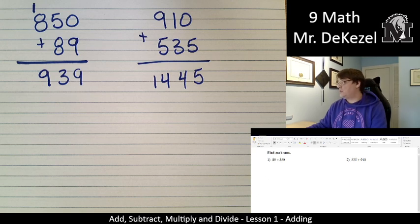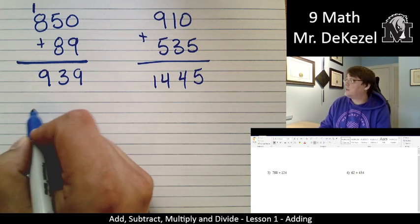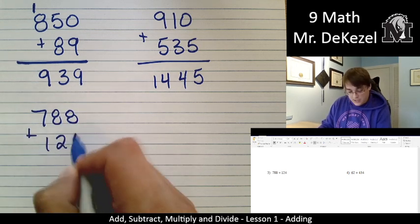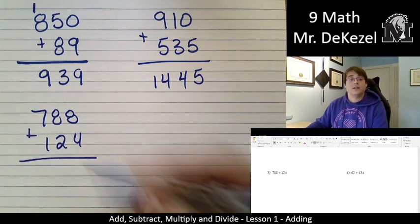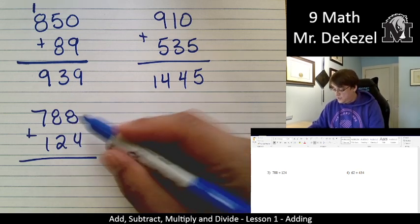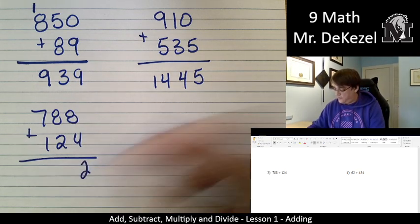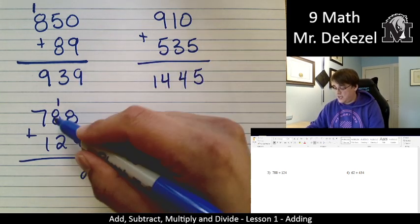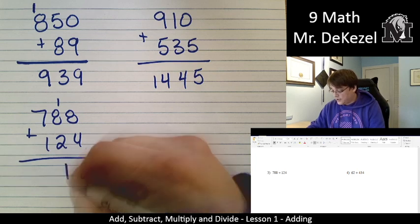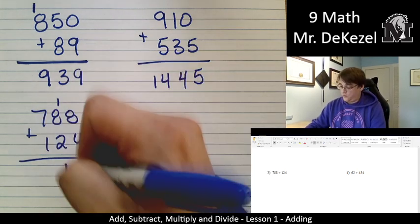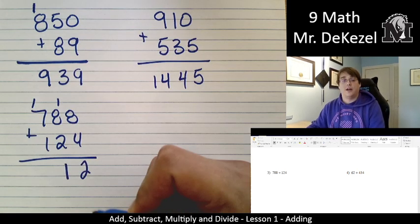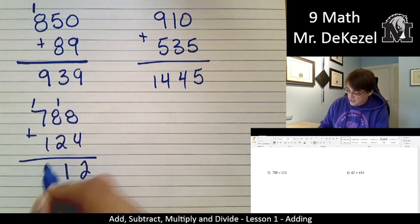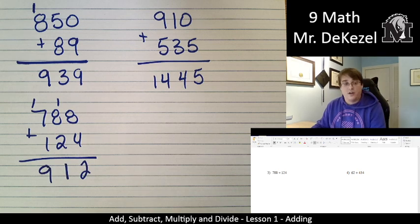We have 788 plus 124. I'm going to add the right hand columns. Eight plus four is twelve, so I have two and I carry the one. Eight plus two is ten plus one is eleven, so I'm going to carry another one. The one goes down here and then the ten part goes up there. One plus seven plus one is nine, and that's 912.